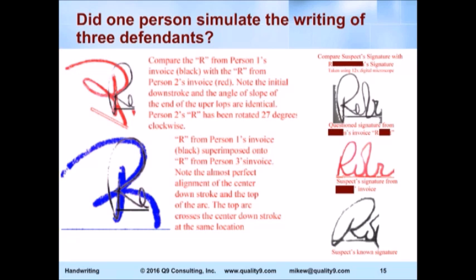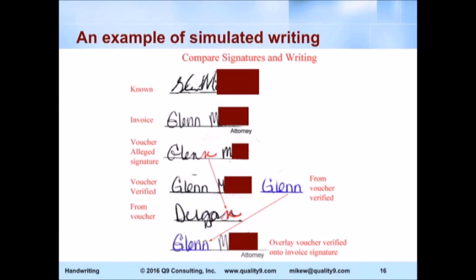This was from a case in Riverside County — a case for the public defender. The question was, did the person really go out and visit the prisoners and get the prisoners to sign off that she had visited with them? By taking the letters and overlaying them on top of each other and looking at how different letters were written — notice the N in Glenn and the N in the voucher — they're almost identical. When the person was presented with my report, she said, 'I just signed them and filled them out because I figured I'd save the county some money.' In that case, the person confessed when presented with the report.